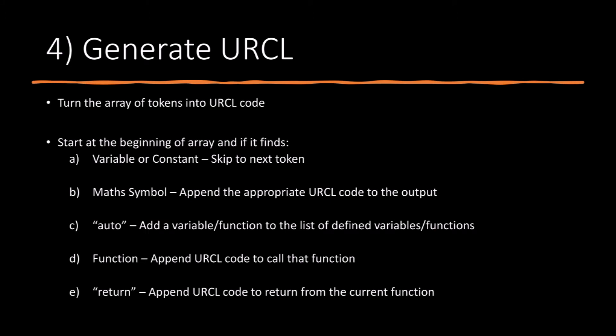Now for the most interesting part - generating the URCL. We must turn the list of tokens into URCL code. We use an algorithm which starts at the beginning of the array, and if it finds a variable or constant, it skips to the next token. If it finds a maths symbol, it appends the appropriate URCL code to the output. If it finds an auto keyword, it adds the variable or function to the list of defined variables or functions. If it finds a function, it appends the URCL code to call that function. If it finds a return keyword, it appends the URCL code to return from the current function.